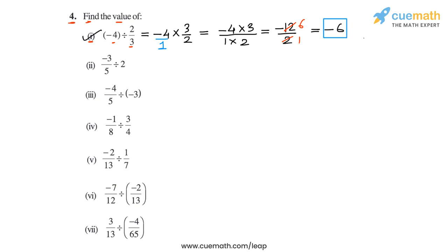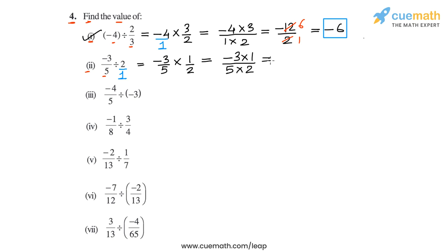In part 2, we have to calculate -3/5 divided by 2. We think of 2 as the rational number 2/1, so we write this as -3/5 multiplied by the reciprocal of 2/1, which is 1/2. Multiplying the numerators gives -3 × 1 and the denominators gives 5 × 2, resulting in -3/10. So in part 2, the value of the expression is -3/10.